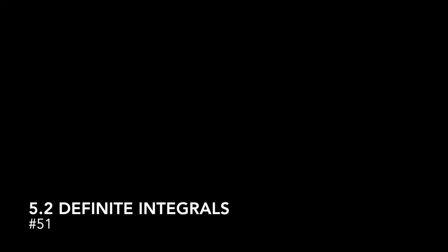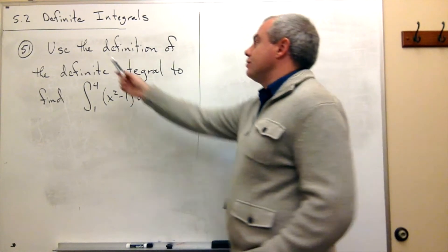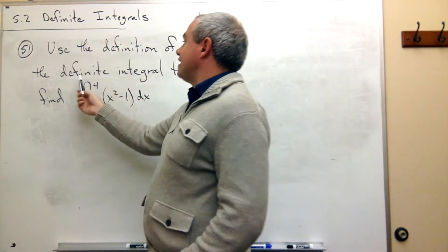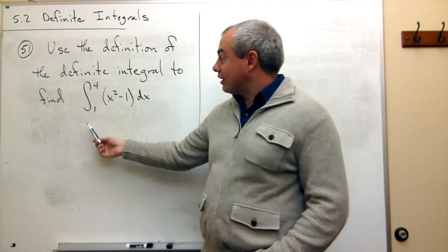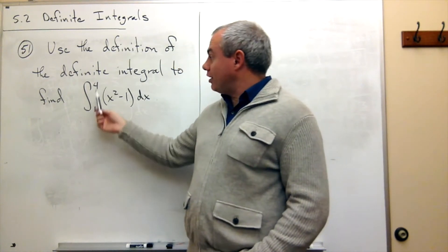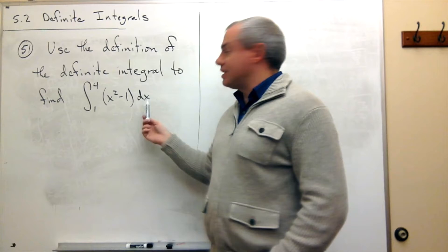Hi, I'm the calculus professor, and today we'll be talking about definite integrals. In problem number 51, we'd like to use the definition of the definite integral to find the definite integral from 1 to 4 of x squared minus 1 dx.